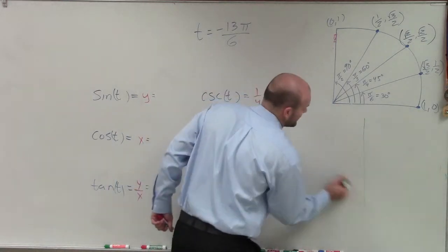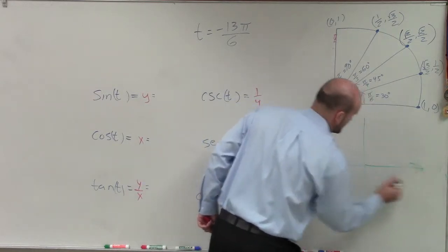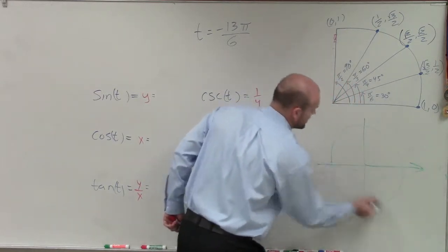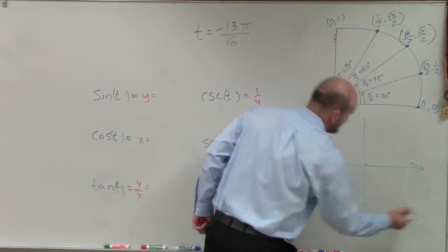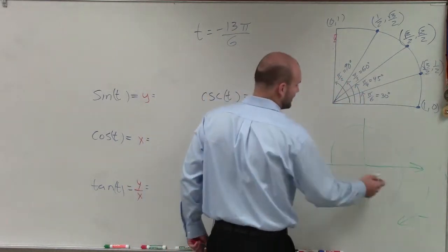And so if I had a nice little unit circle, and remember, this is always our initial side. Well, notice that we're going in the negative direction. So therefore, I'm going to go all the way around. I'm going in the clockwise direction.